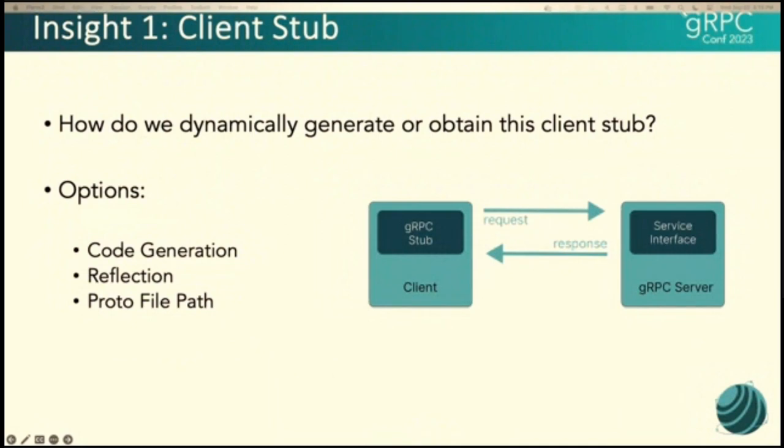The second is reflection. The server would have to have the reflection on it, which is not always the case. And then the last method, which is what we went with is the profile path. It's pretty simple. You just put your file path in a config file for us. And then we just use that to create the client stub. So why is this nice? It's super simple. It's easier to manage different versions of your proto files. You can have dynamic updates. So switching proto files without recompiling the tool.